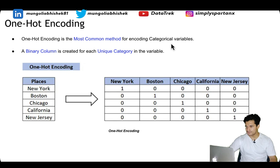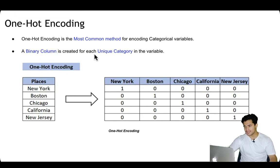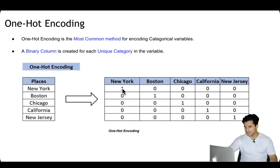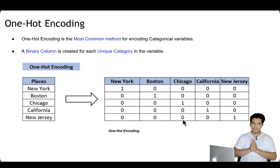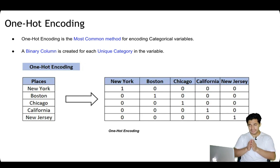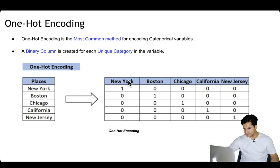Next is one-hot encoding, which is the most common and popular method for encoding categorical variables. A binary column is created for each unique category in the variable. For example, if your variable is places — New York, Boston, Chicago, California, New Jersey — for each unique category you create one binary variable: New York is present and all others are absent, Boston is present and all others are absent, and so on.